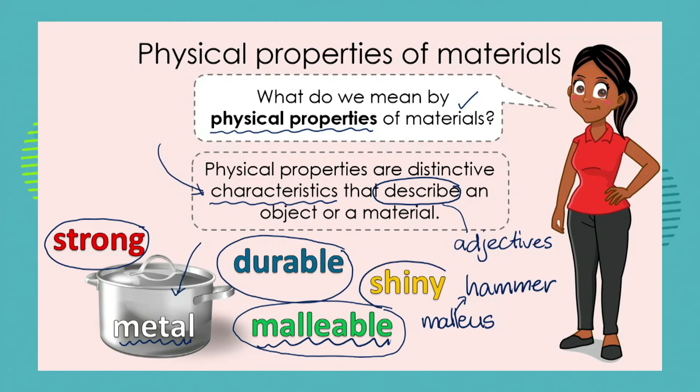One of the last properties we're going to focus on is that it's shiny. You may think shiny just makes the pot pretty or attractive to look at, and we can see it's nice and clean because it's shiny. But shininess is also going to help us when we look at how heat is conducted through a material — we'll come to that aspect in a couple more lessons.